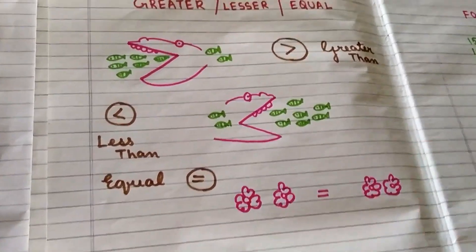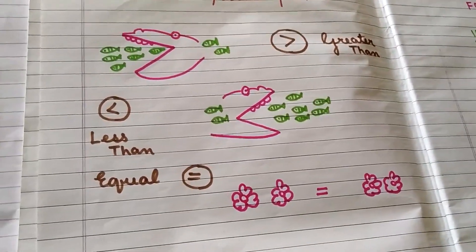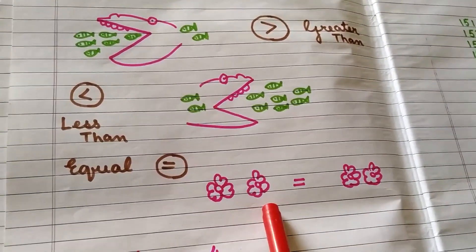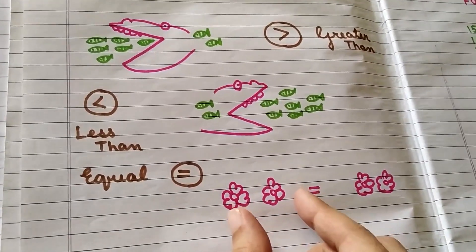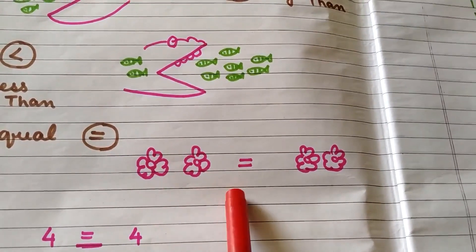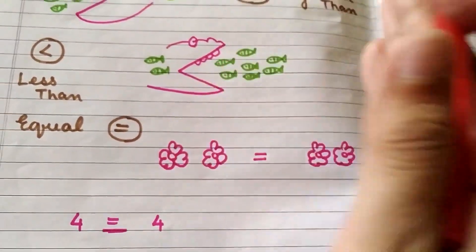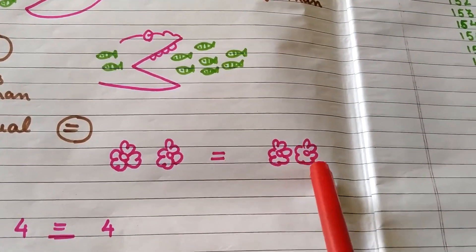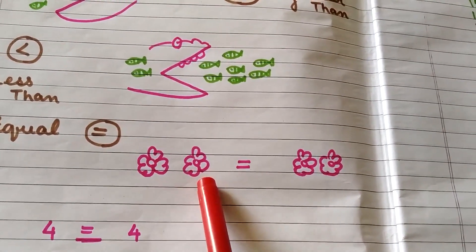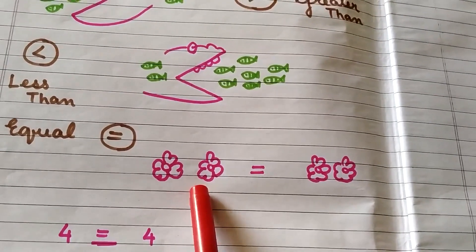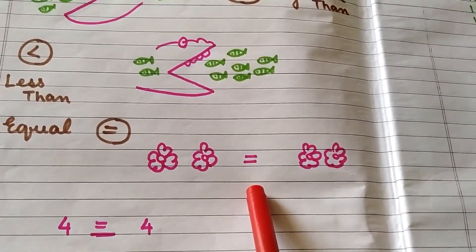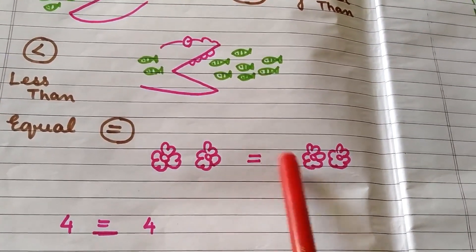Equal to sign. The equal to sign is the simplest of all — you don't have to remember anything children. Just see that both sides are having the same number of items. For example, I have shown it with the help of this flower. Look at these flowers: there are how many flowers over here? One and two on this side, whereas how many flowers on this side? One and two. So that is why I have put the equal to sign, because the number of flowers are the same on both sides.